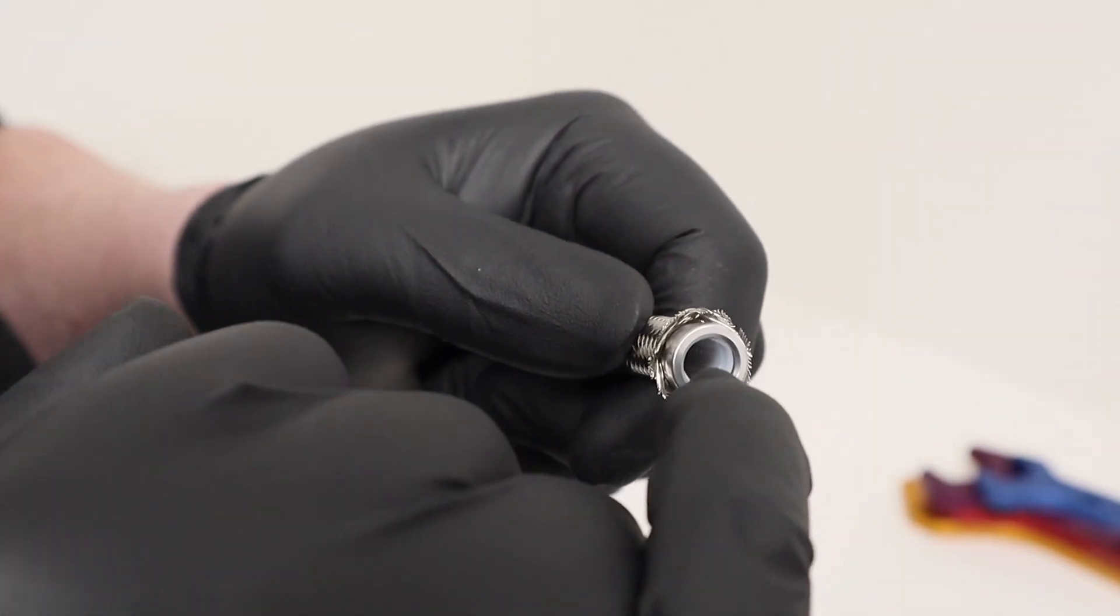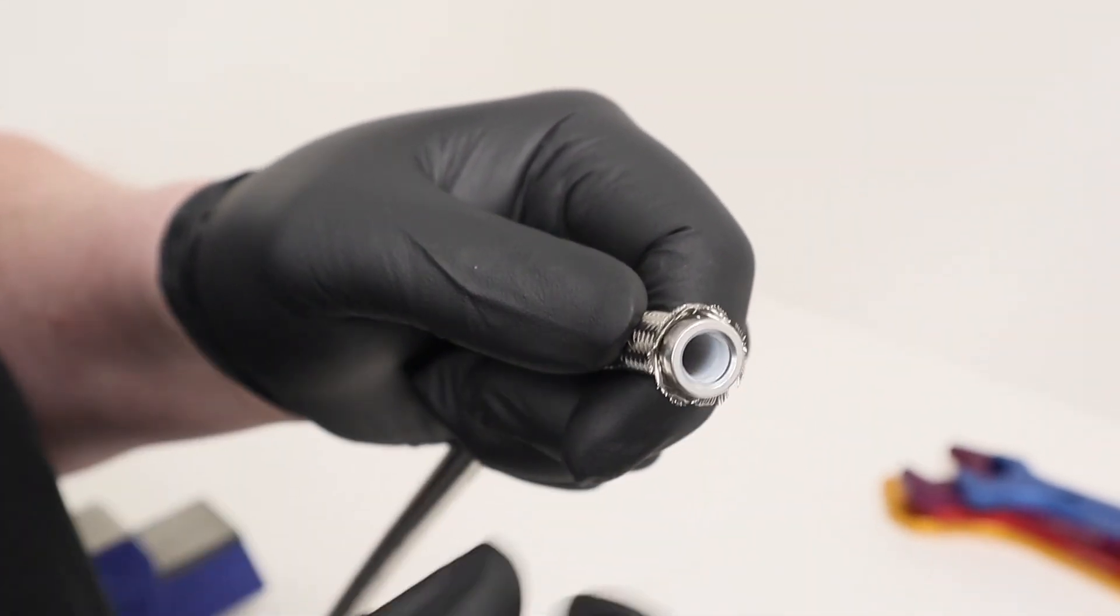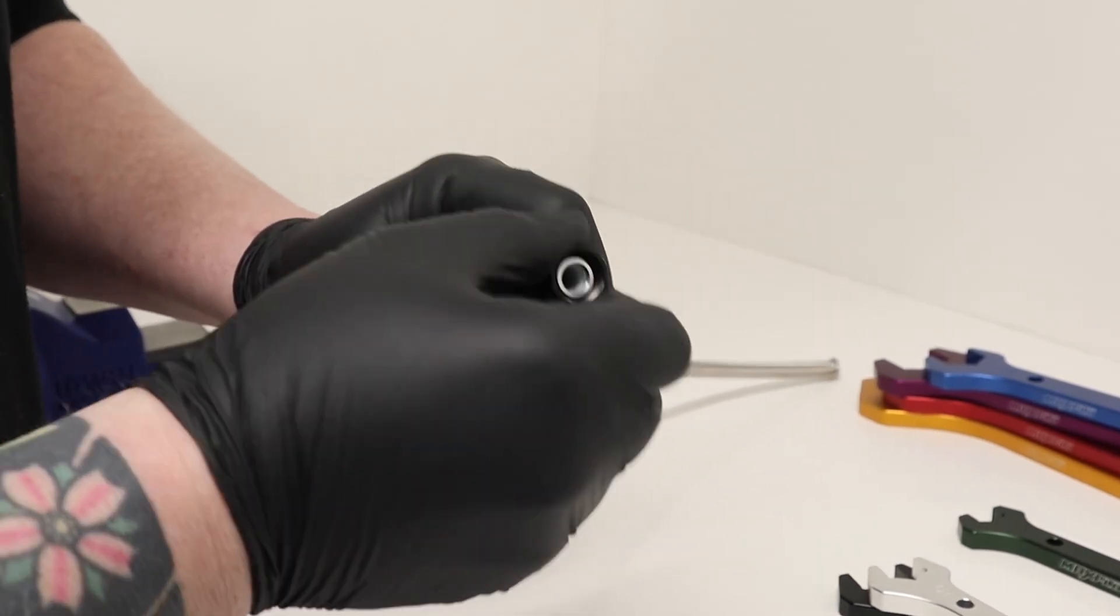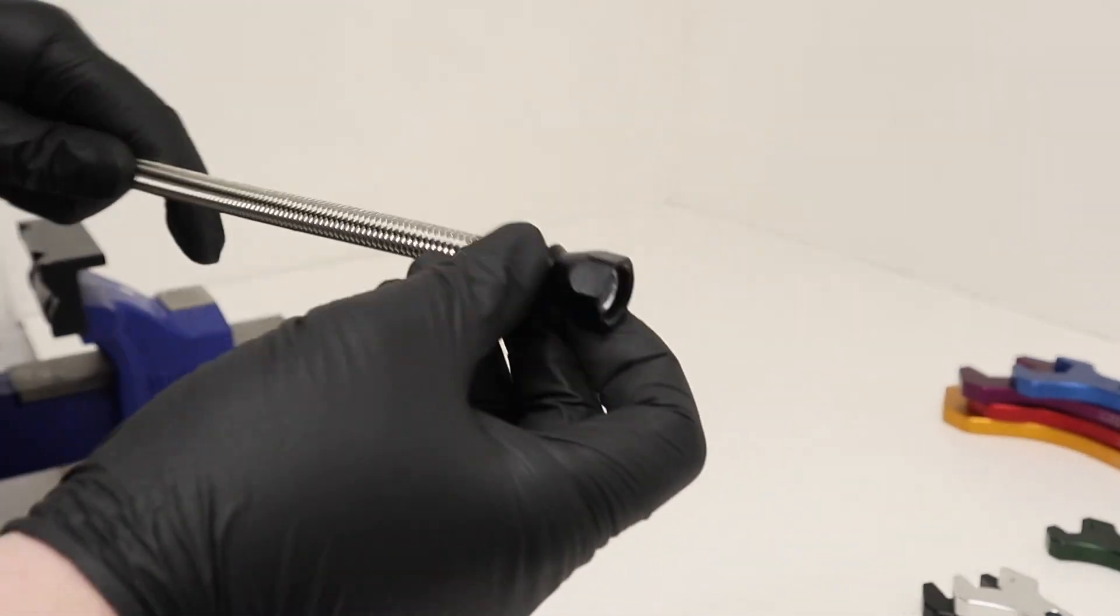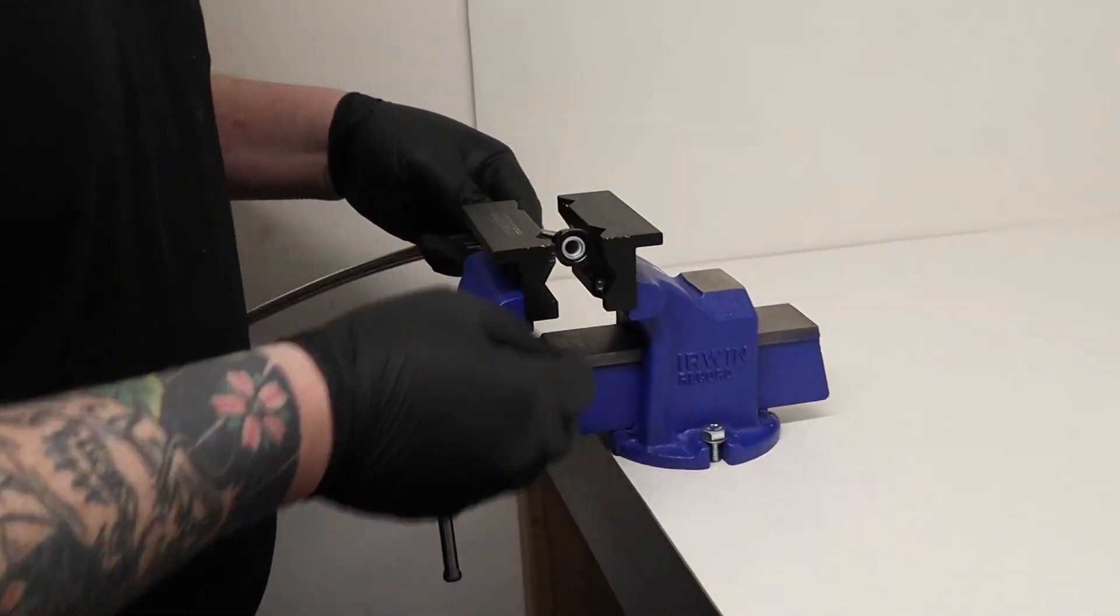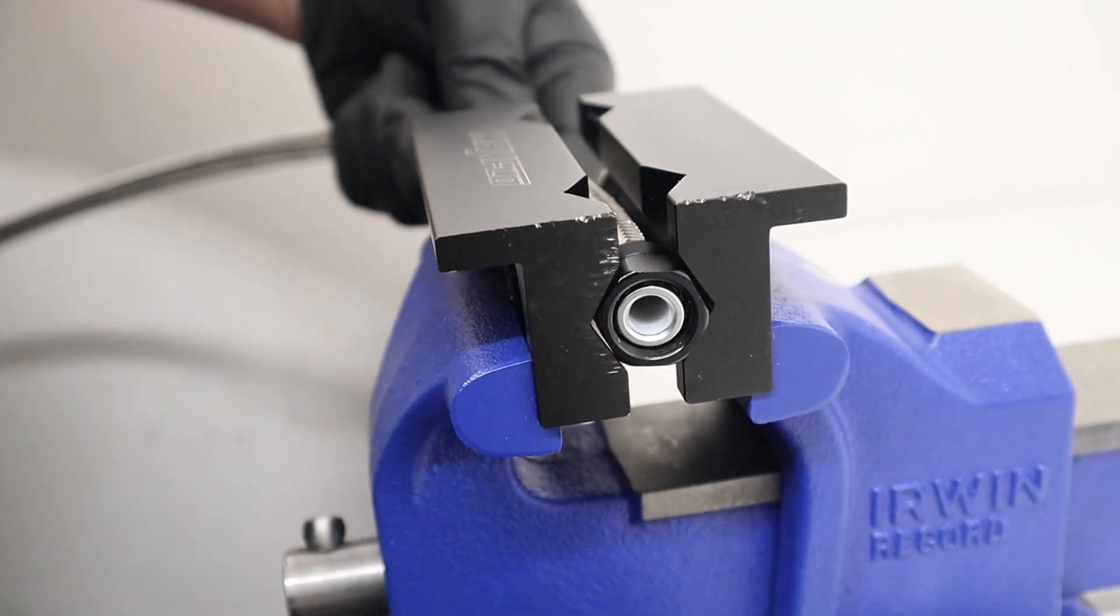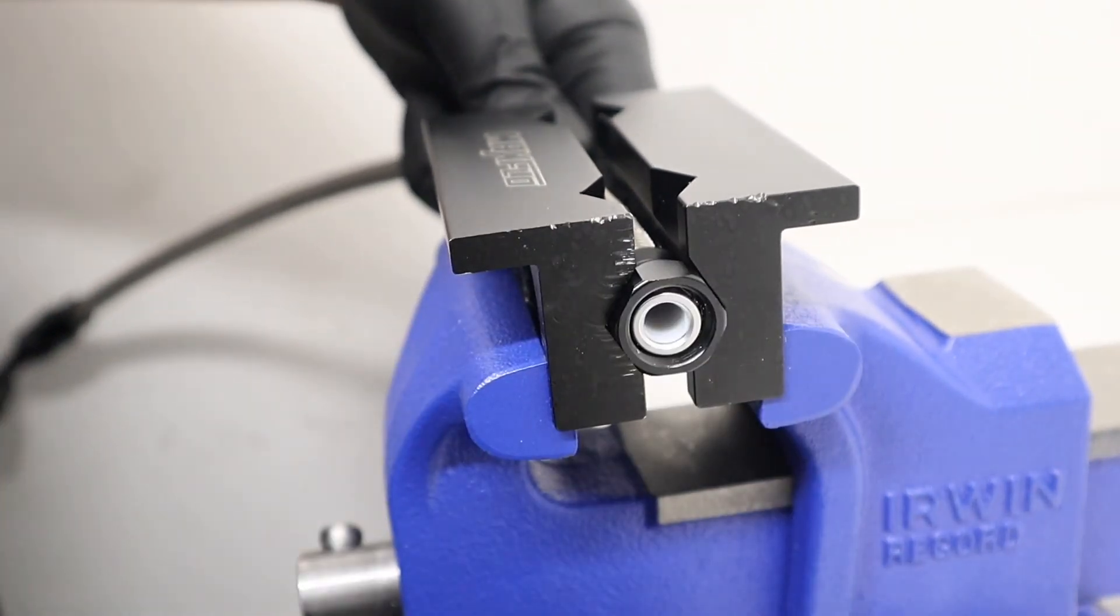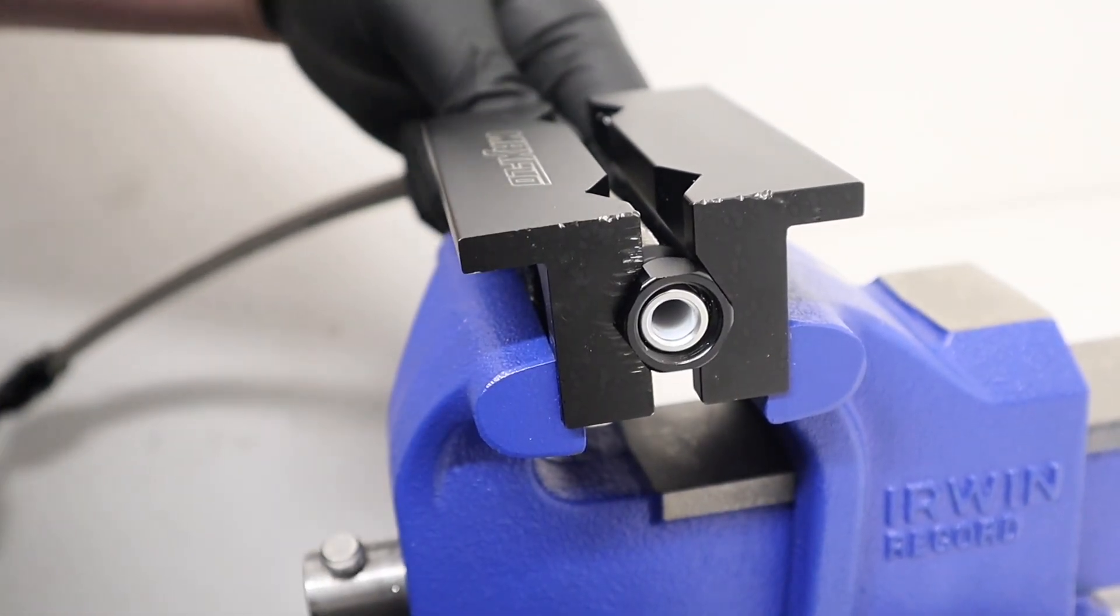Always make sure the hose is fully home inside. Place it into the socket and into our vise. We put the socket of the fitting into our jaws, making sure that it's in the correct position so we don't mark anything. Small squeeze.